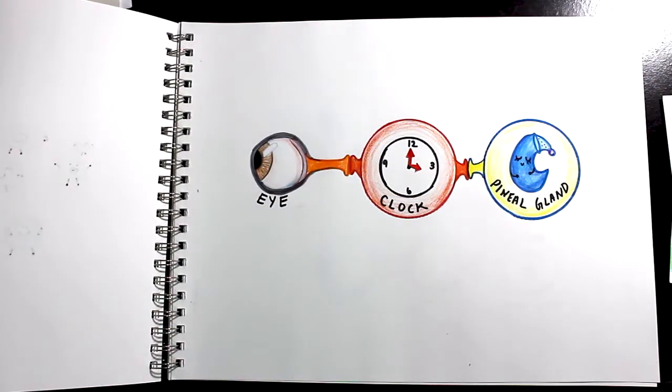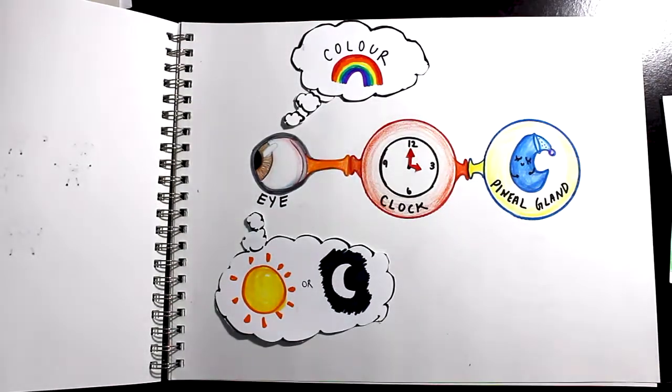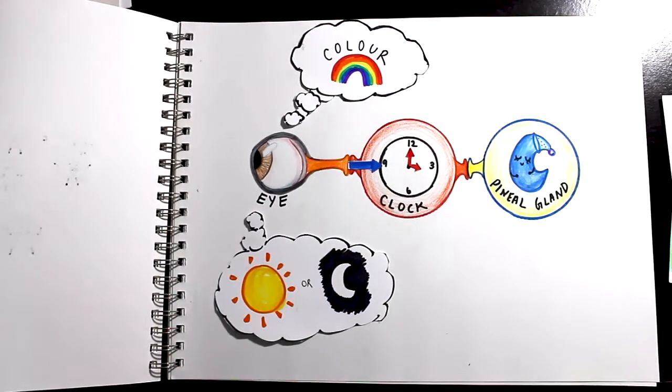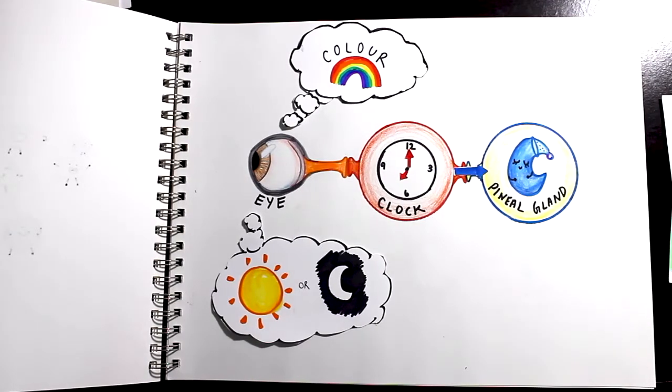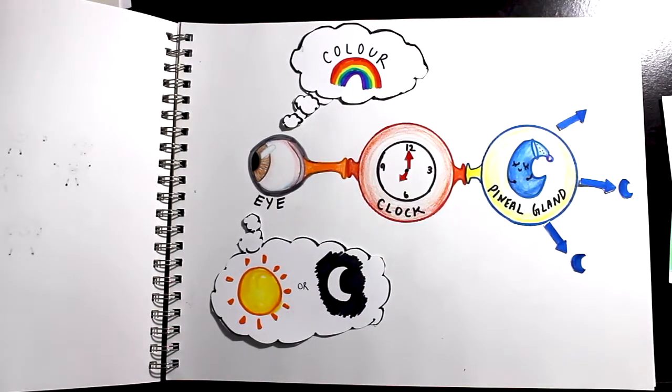Your eyes send signals to your natural clock about how much light there is and what color the light is. Your clock then sends signals to another part of your brain called the pineal gland to release melatonin.